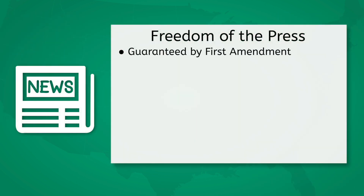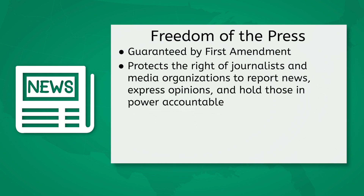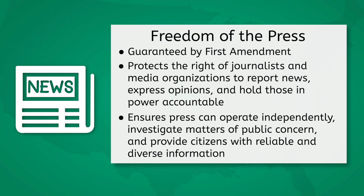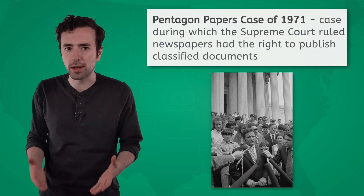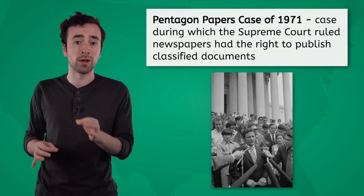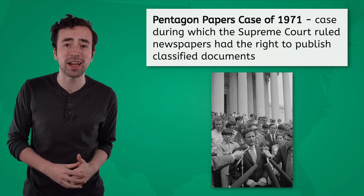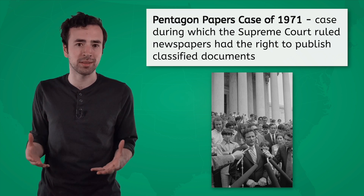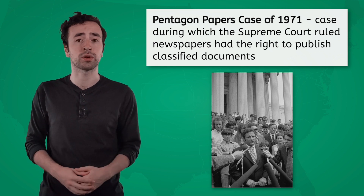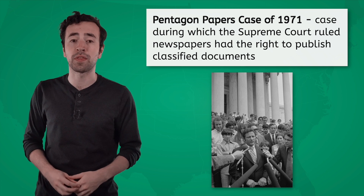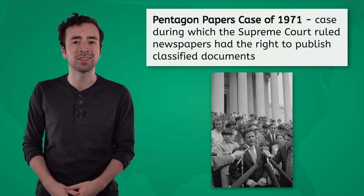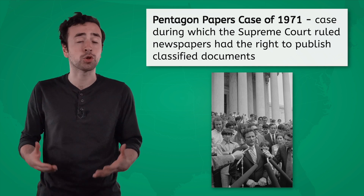The First Amendment also guarantees freedom of the press to all Americans, protecting the right of journalists and media organizations to report news, express opinions, and hold those in power accountable. The Pentagon Papers case in 1971 is an example of the critical role of freedom of the press. The Supreme Court ruled that newspapers had the right to publish classified documents revealing the government's mishandling of the Vietnam War and the subsequent cover-up of these failures. This landmark decision solidified the principle that the press plays a vital role in uncovering government misconduct, promoting transparency, and fostering public debate on critical issues.